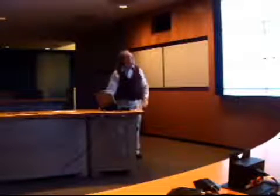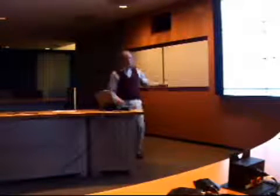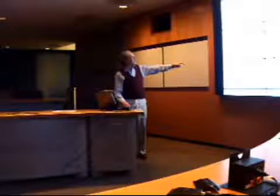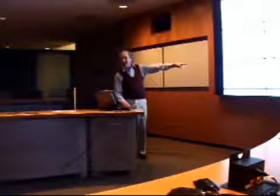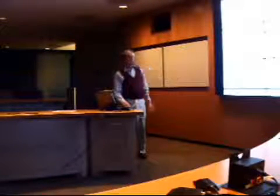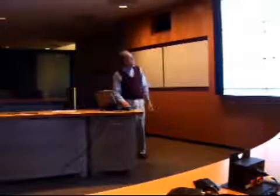Under stereo with glasses, you have categories like anaglyph, polarizers with different types—circular and linear polarization—and shutter glasses.